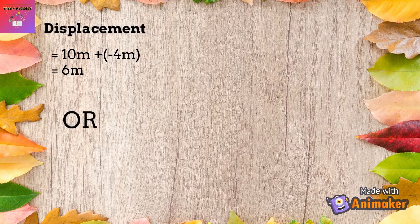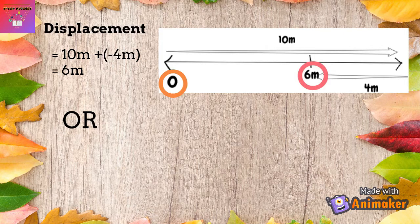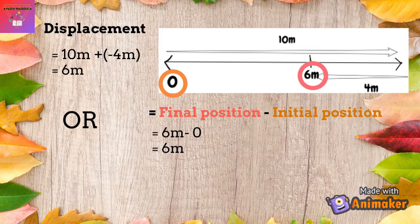The other way to find displacement is that we know displacement is the shortest distance from the initial point to the final point. You can draw a line graph and identify the initial and final points of the journey. Here, the final point is 6m and the initial point is 0. So the formula is final position minus initial position: 6 minus 0 equals 6m.